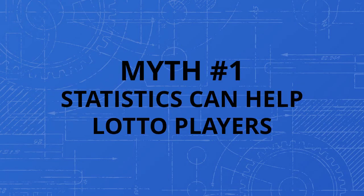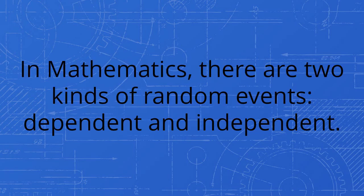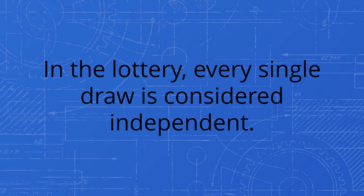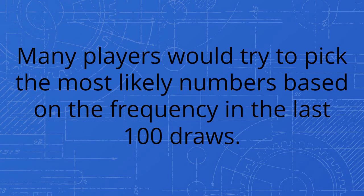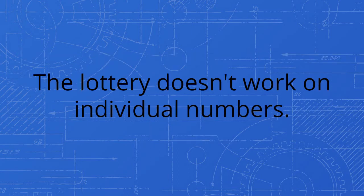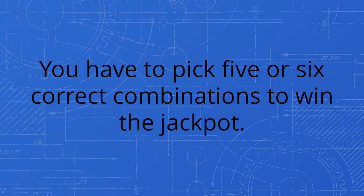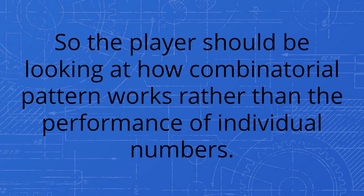Myth number one: statistics can help lotto players. In mathematics there are two kinds of random events: dependent and independent. In the lottery, every single draw is considered independent. It only means that the previous 100 draws will not affect the next draw. Many players would try to pick the most likely numbers based on frequency in the last 100 draws. The lottery doesn't work on individual numbers. You have to pick five or six correct combinations to win the jackpot. So the player should be looking at how combinatorial pattern works rather than the performance of individual numbers.